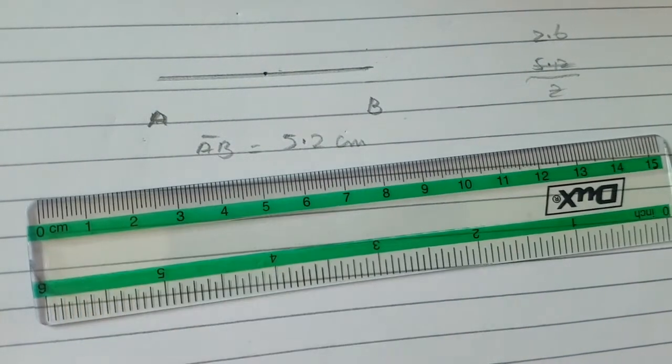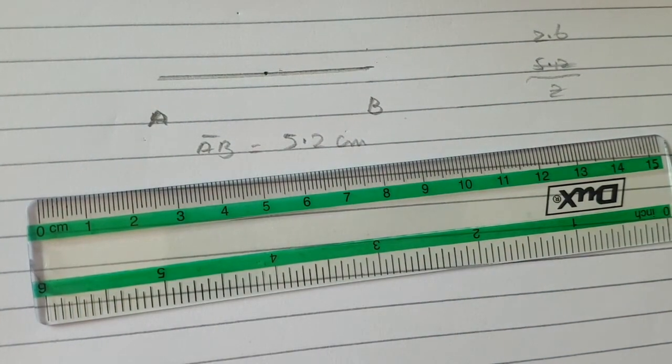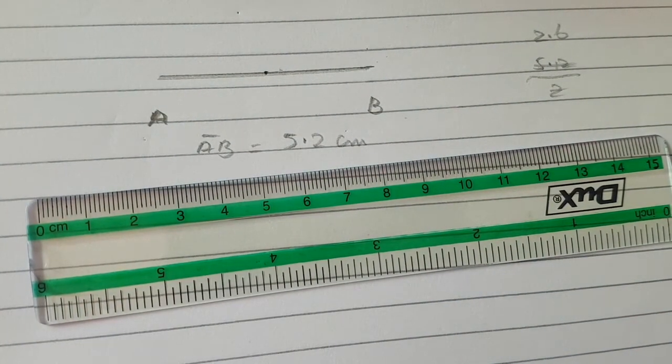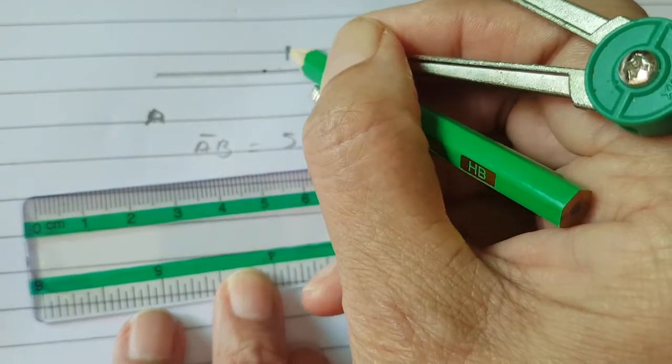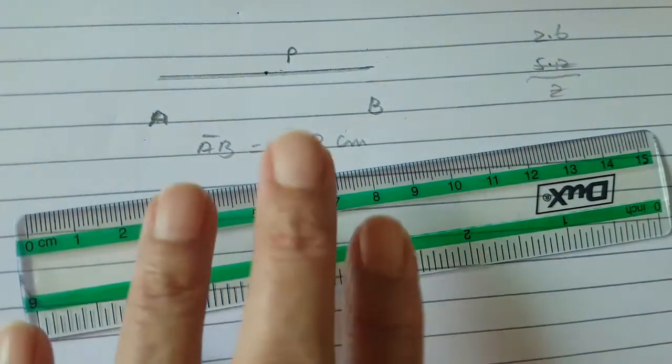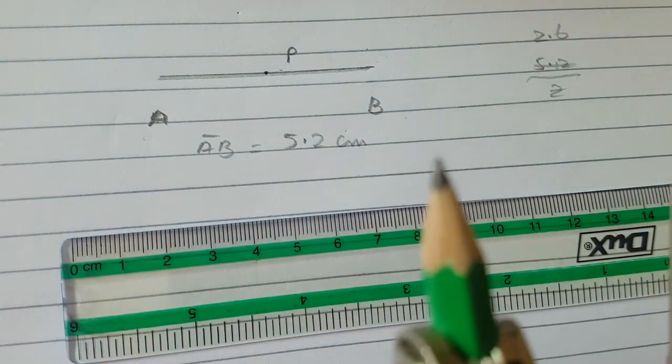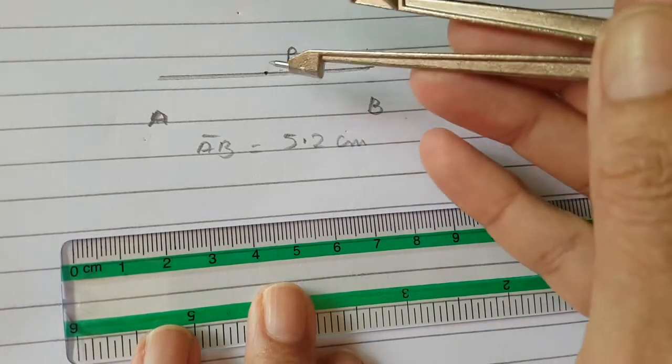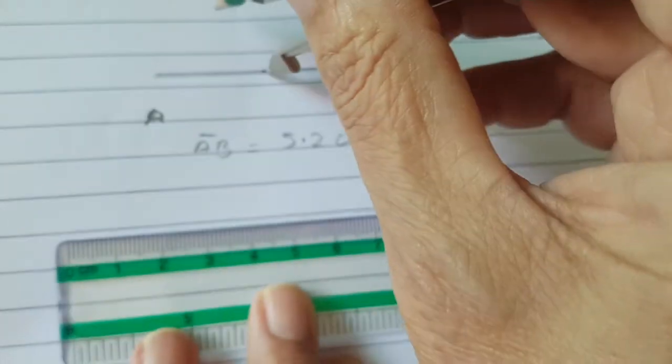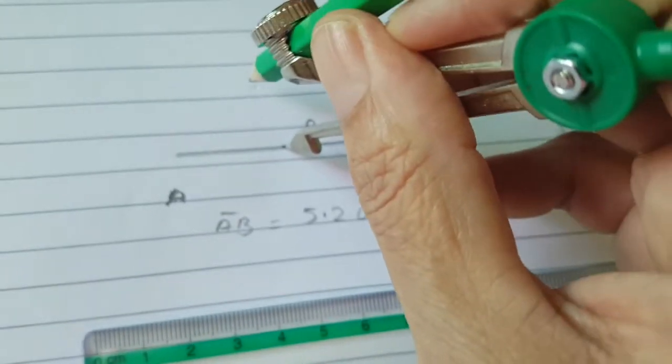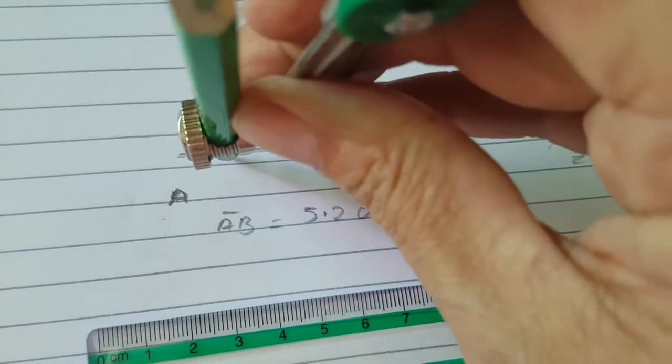Now the midpoint is mentioned as P. Open your compass at some suitable radius and put your needle at the midpoint P and draw two points on the line.